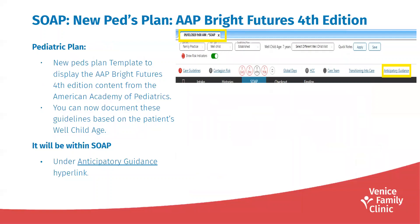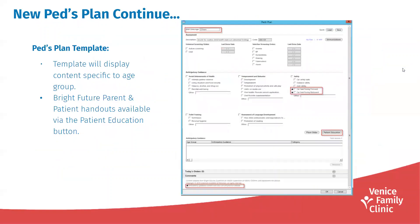What's also been added is the Bright Futures Fourth Edition content, and that's based off of the patient's well child age. That can be found under the anticipatory guidance hyperlink. Once you click that hyperlink, it will bring you to this template and you'll be able to change or update the well child age if needed — all the content will be based off of well child age. That's one of the new features coming with the upgrade.